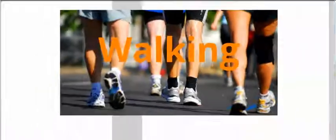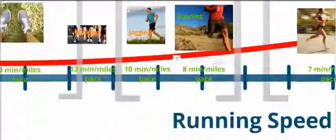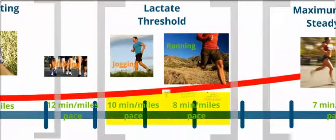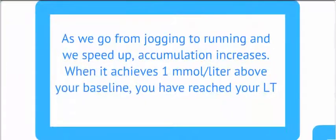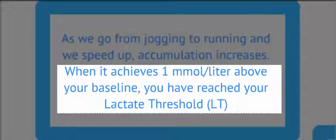As we go to walking, then the lactate is going to start accumulating a little bit more, but the clearance is still occurring pretty fast. As we start jogging and then running and increasing the pace, lactate is going to continue to accumulate. When it achieves 1 millimole per liter above your baseline, you have reached your lactate threshold, or LT.